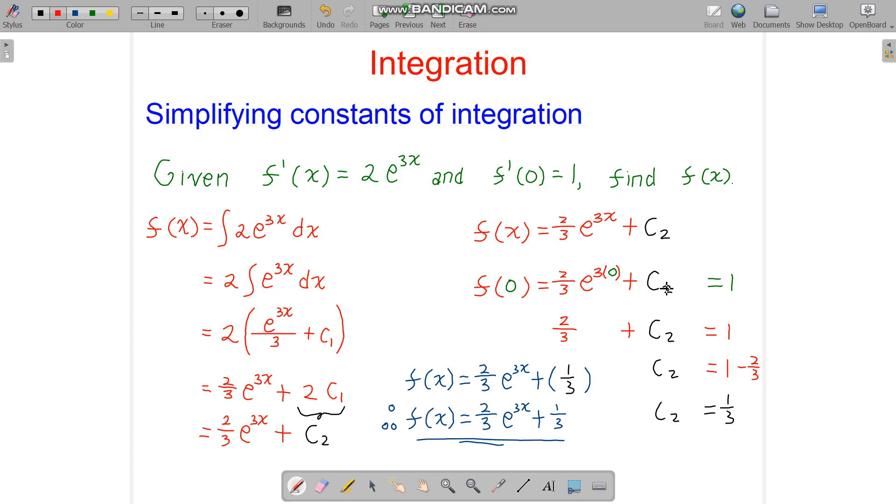So here we are using c2 instead, and we get 2/3 plus c2 equals 1. Of course, the constant will be different. So this time the constant is just 1/3. But if we replace this c2 with 1/3, of course, we get exactly the same result here, 1/3, also 1/3.